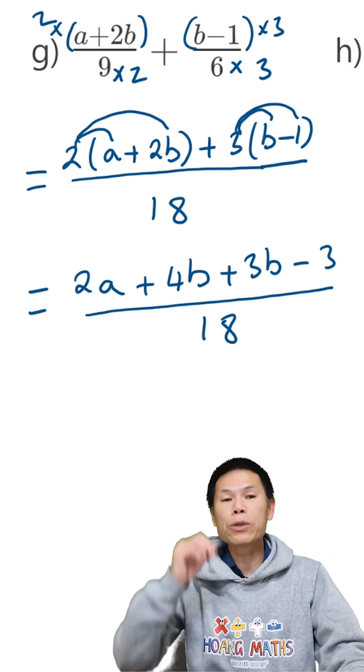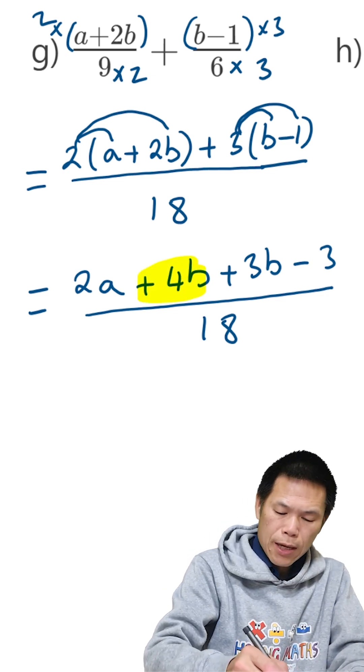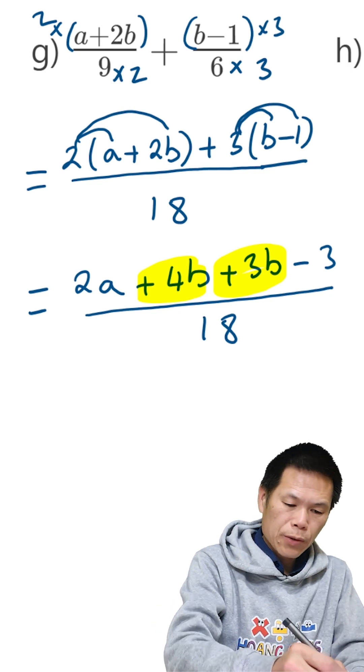Now we just need to collect the like terms. So we have 4b, 3b. So that gives me 7b.